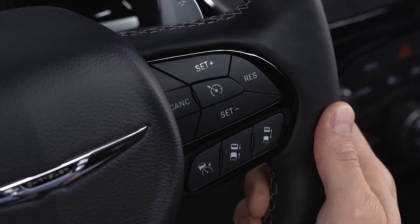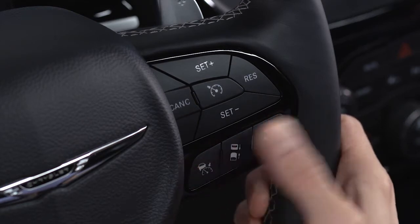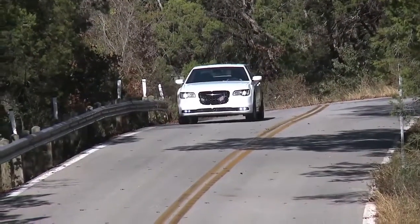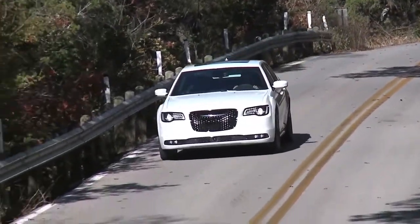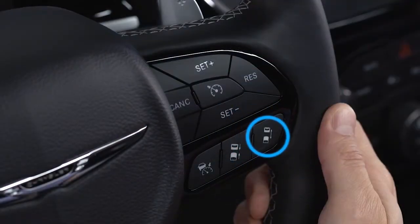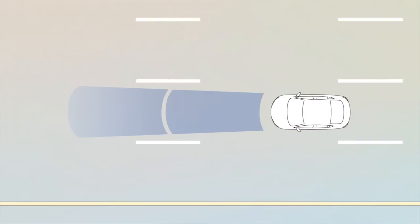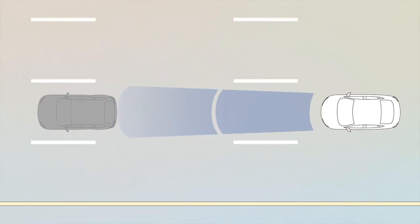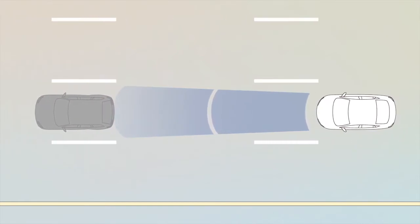Now let's look at the adaptive part of adaptive cruise control. To turn ACC on, push the ACC on/off button, then push set plus or set minus to engage. The system will now maintain a set distance between you and the driver in front of you without having to constantly reset your speed. The increase and decrease distance buttons let you change the distance between you and the driver in front of you. If there's no driver ahead, your set speed will be unaffected. But when a slower moving driver enters your lane, the system automatically adjusts your speed to maintain the distance setting.